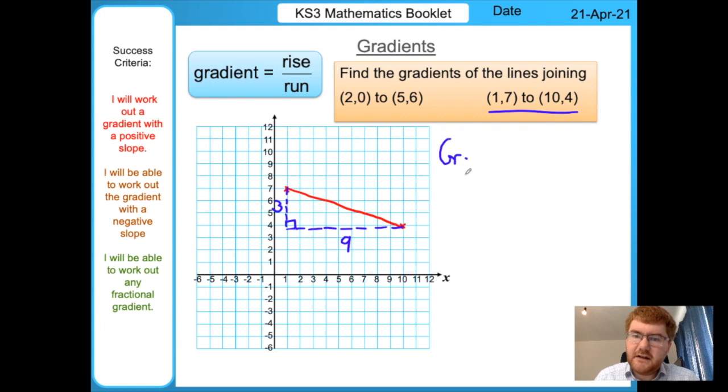This one is going to go a long way: 1, 2, 3, 4, 5, 6, 7, 8, 9, so this is 9. To work out the gradient, we do our rise over run. Our rise is 3, the height is 3.